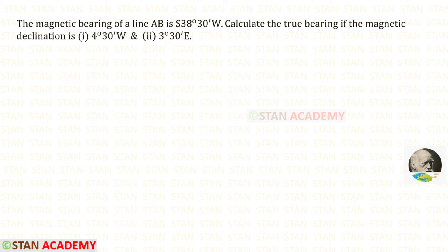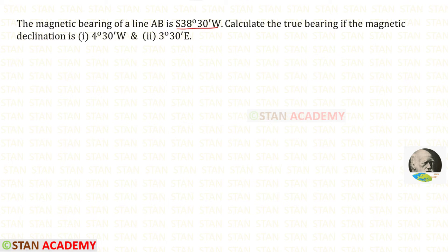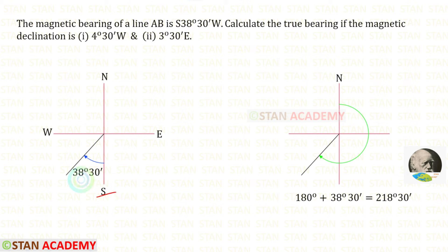Now let us see a problem. The magnetic bearing of a line AB is south 38 degrees 30 minutes west. Calculate the true bearing if the magnetic declination is 4 degrees 30 minutes west and 3 degrees 30 minutes east. The bearing is given in reduced bearing, so first we have to convert it into whole circle bearing. To convert south 38 degrees 30 minutes west, we add 180 degrees, and we get 218 degrees 30 minutes.